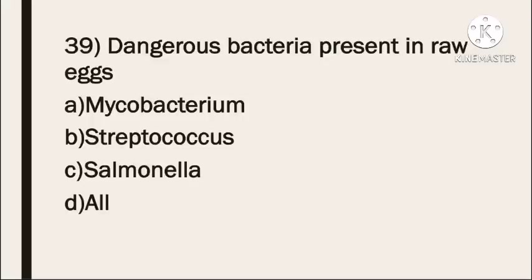Next question: dangerous bacteria present in raw eggs — Option A: Mycobacterium. Option B: Streptococcus. Option C: Salmonella. Option D: all. The correct answer is Salmonella — it is the dangerous bacteria present in raw eggs.